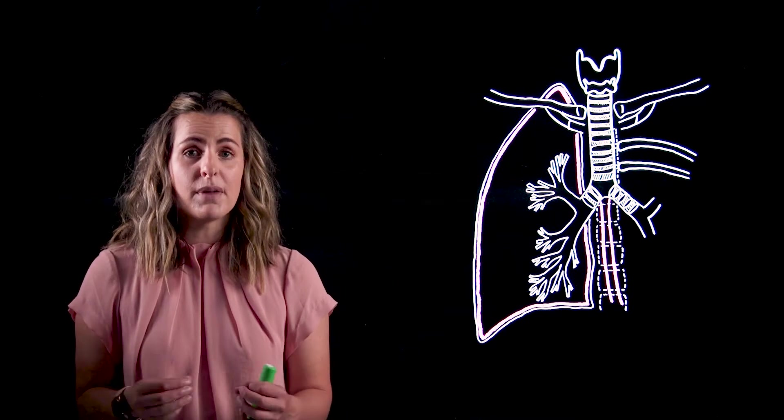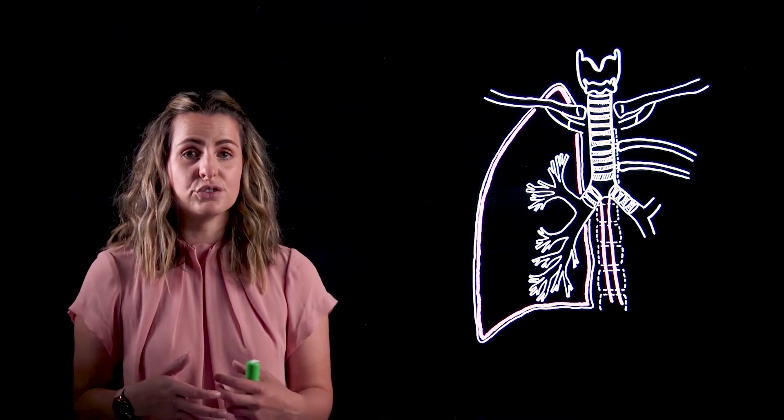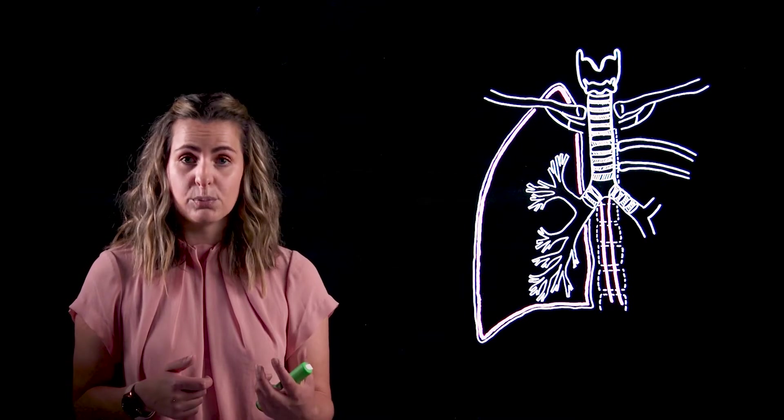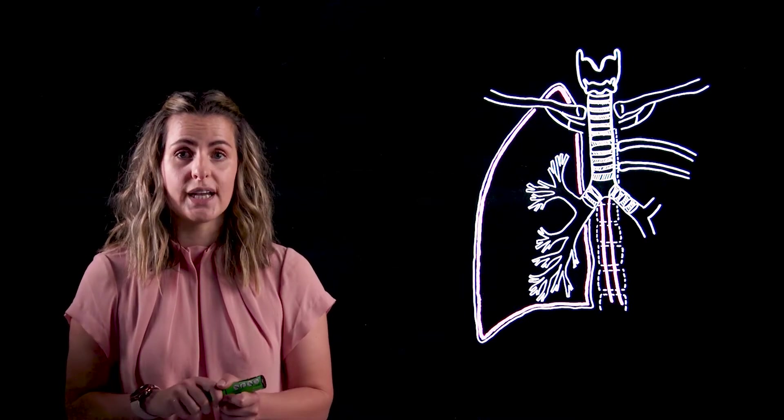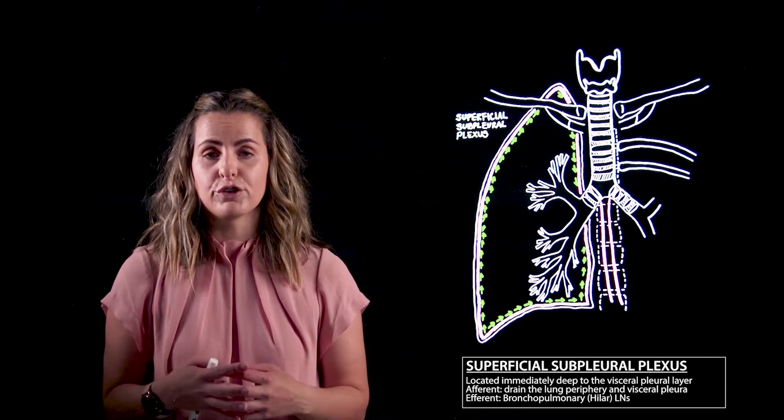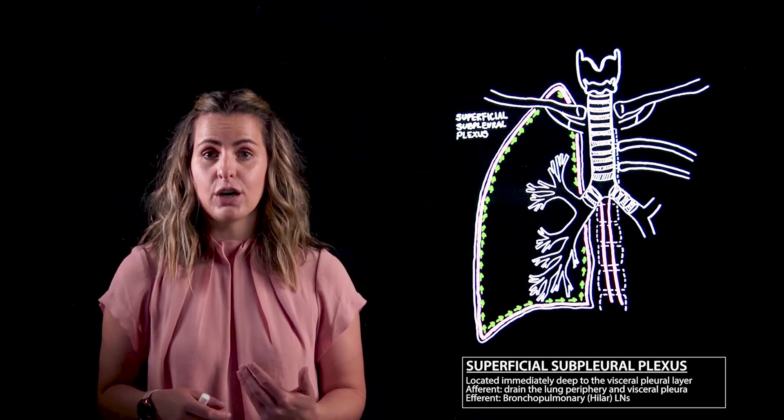Based on your anatomical knowledge, you know that the visceral pleura is attached to this layer. Therefore, the edges and margins of the fissures of the lung are circulated by the vessels from the superficial plexus all the way to reach the hilum of the lung to which they're going to drain. These superficial vessels are responsible for draining lymph from the periphery of the lung as well as the visceral layer of pleura.